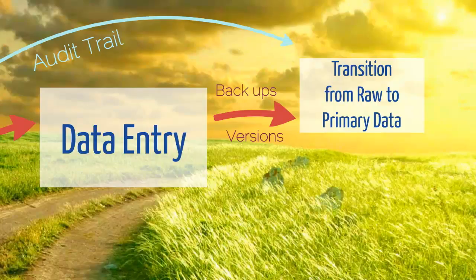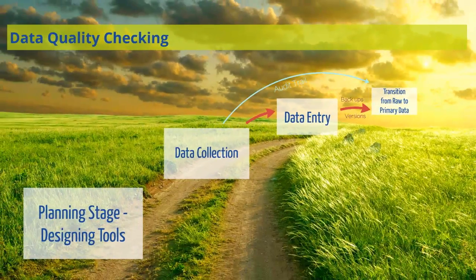During an activity you are going to have several versions of the data: the raw data, the primary data, and the several data sets in between these two stages. It is imperative that you keep track of these versions and record the changes made from one version to the next in an audit trail document.